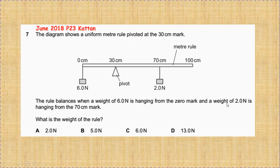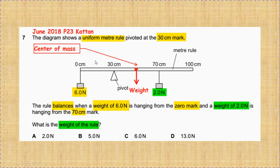A weight of 2 newtons is hanging from the 70 centimeter mark, and it's asking what is the weight of the rule. To answer the question, we highlight some keywords like the uniform meter rule and the 30 centimeter mark.